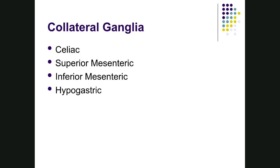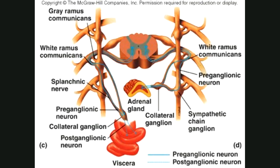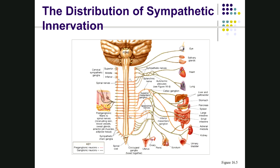There are also four collateral ganglia — ganglia that are not part of the sympathetic chain — and they are all located in the abdomen: the celiac, superior mesenteric, inferior mesenteric, and hypogastric ganglia. A pre-ganglionic fiber can leave the chain and travel to one of these collateral ganglia, where the synapse occurs, before the post-ganglionic fiber continues to the target organ.